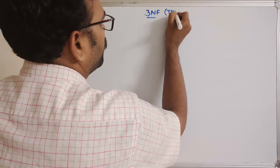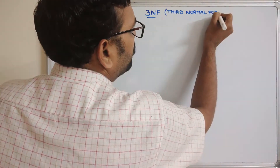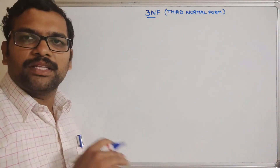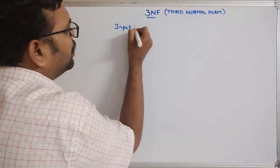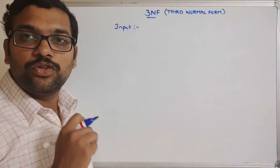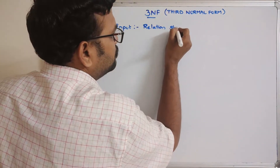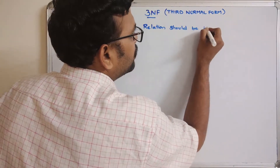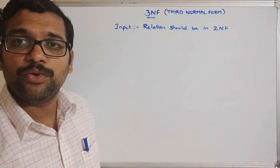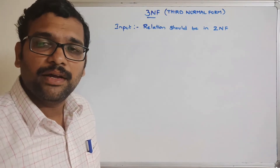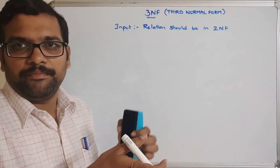In the previous sessions, we discussed the first normal form and the second normal form. The input for the third normal form is that the relation should be in 2NF. If the relation should be in 2NF, first the relation should be in 1NF, so you need to follow the normalization from the beginning.